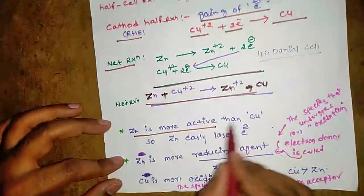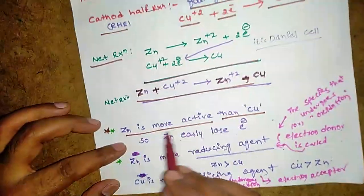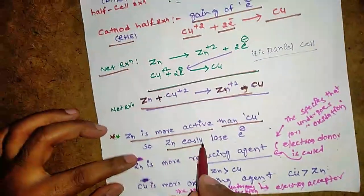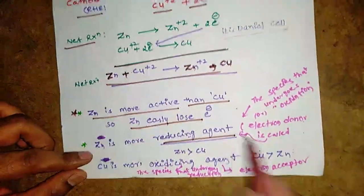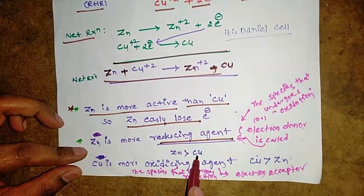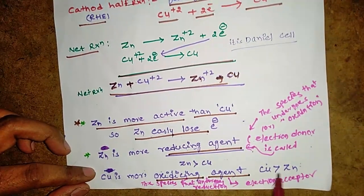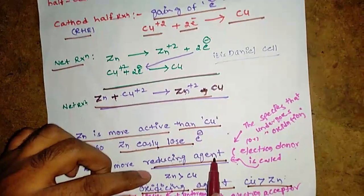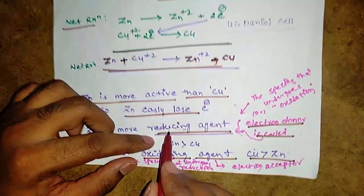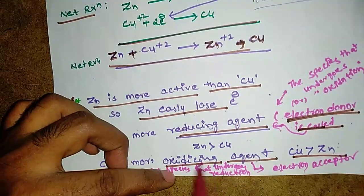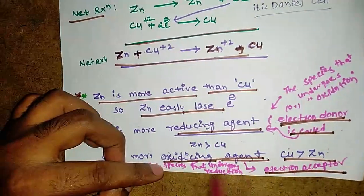Zinc is more reactive than copper, so zinc easily loses electrons. Zinc is the stronger reducing agent, while copper is the stronger oxidizing agent. The reducing agent is the electron donor, and the oxidizing agent is the electron acceptor.